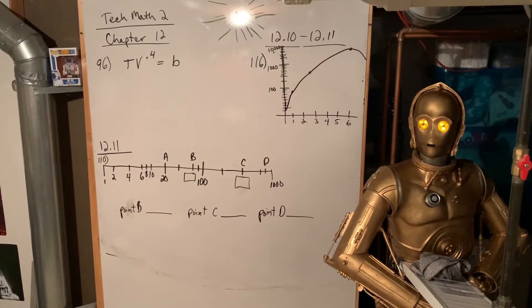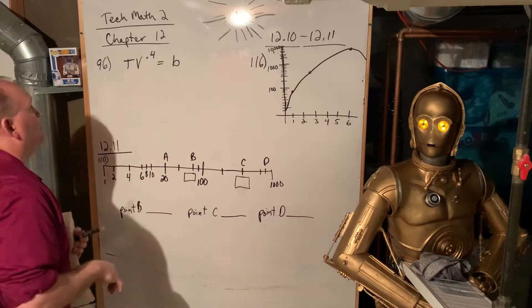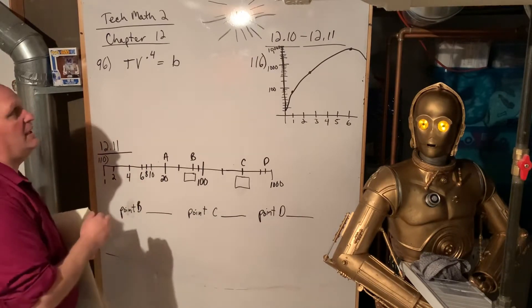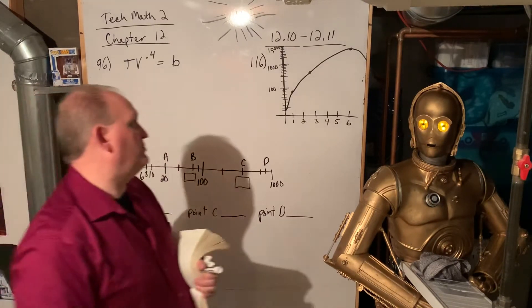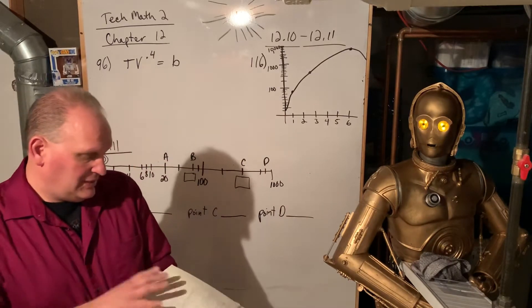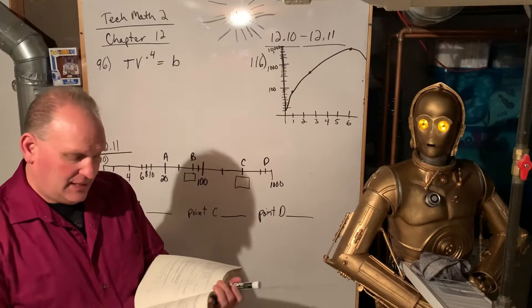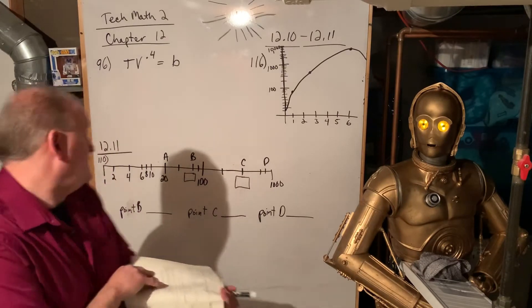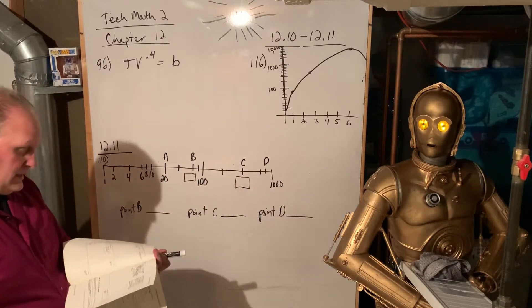Okay, we're back. We're looking at Chapter 12 in the red book Tech Math 2. We're looking at 12.10 and 12.11. So these aren't bad. 12.10 is just a pretty easy plug-and-chug, so let's look at one from there. We'll only look at 96.